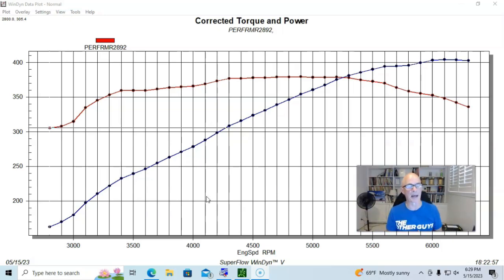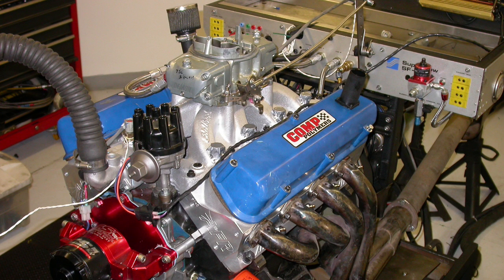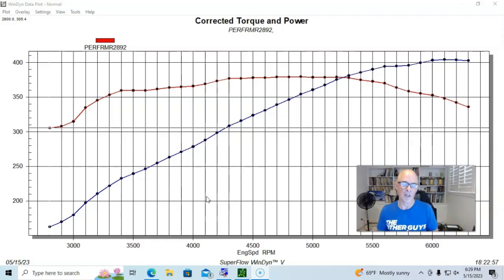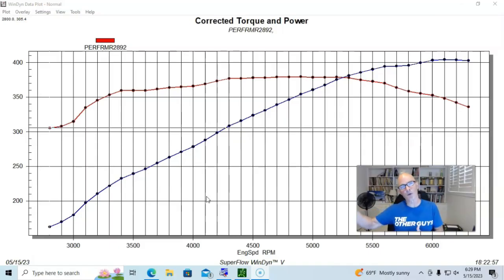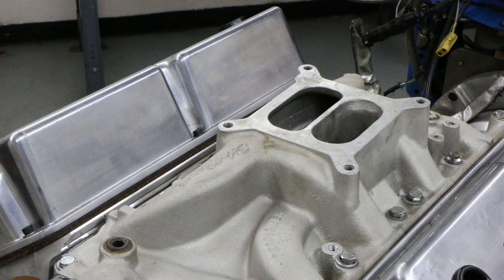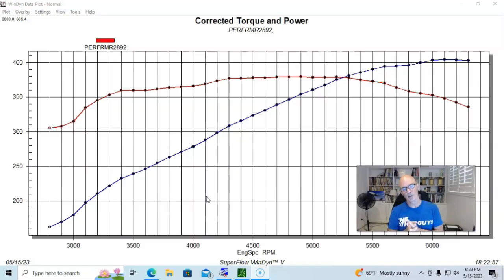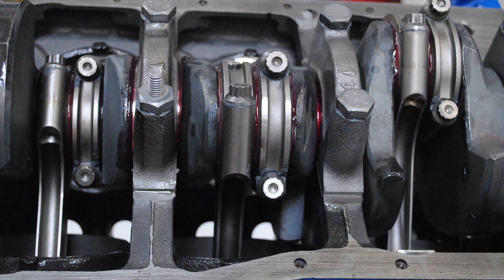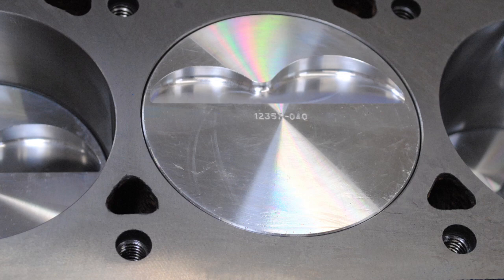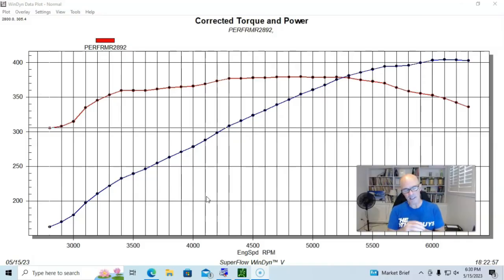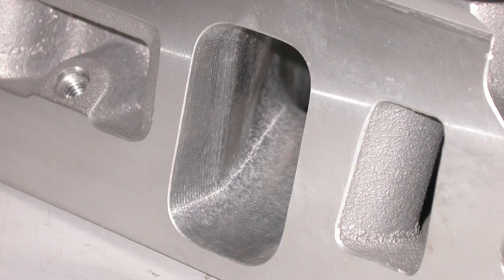We wanted a good combination to really test the limits or the power potential of each combination. Obviously in reality on a single plane manifold you'd build that combination different than you would on a dual plane. We picked something kind of in between. We built a five liter 302 with forged rods and pistons, a stock crank, bored 40 over with flat top pistons with shallow valve reliefs, and a set of milled 185 Airflow Research heads.